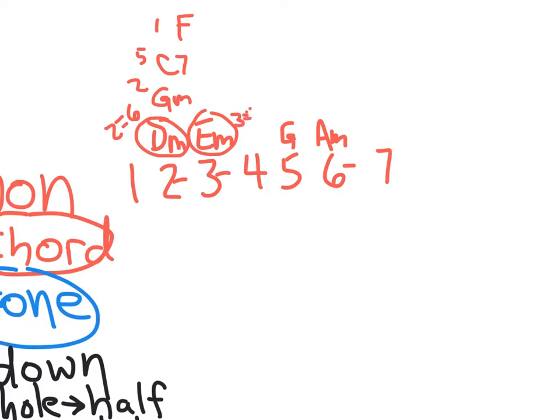To get to the key of G, you would find the three chord in the key of C becomes the two of the key of D. I'm sorry, I think I said G. Two, which then goes to five, which then goes to one, which is the new D.